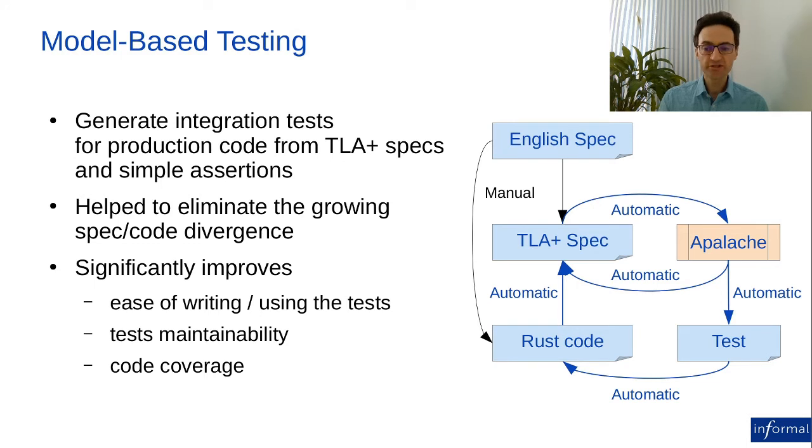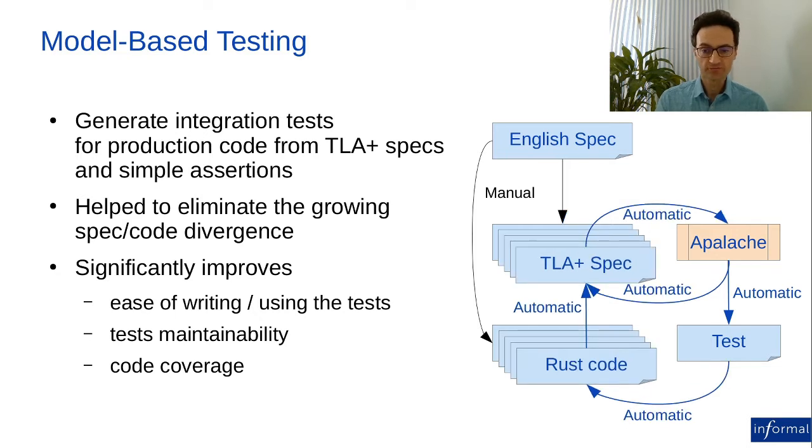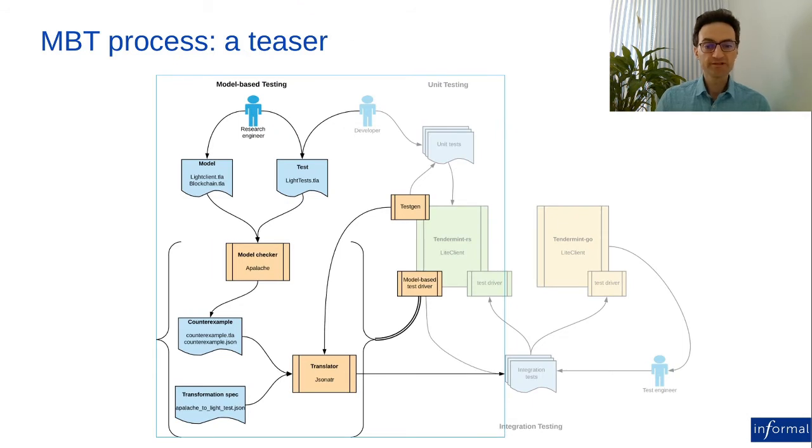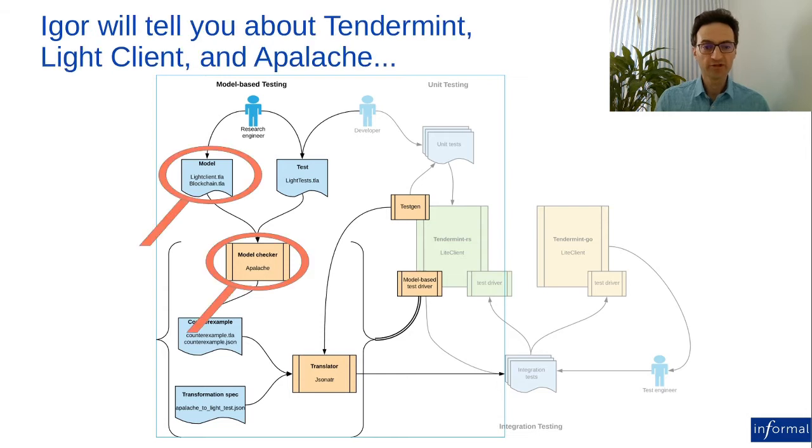After we start to develop code, the code starts to diverge from the specifications. The necessary feedback loop is missing here. The way we propose to address this issue is by model-based testing. In model-based testing, we generate integration tests from simple TLA Plus assertions. This helps us eliminate the divergence between the spec and the code. They now evolve in sync, significantly improving ease of writing and using tests, test maintainability, and achieving higher code coverage.